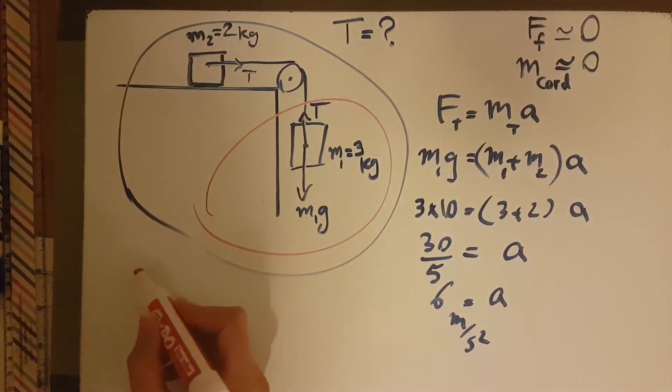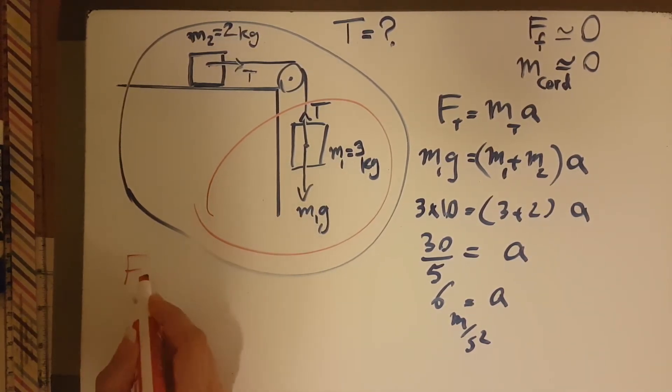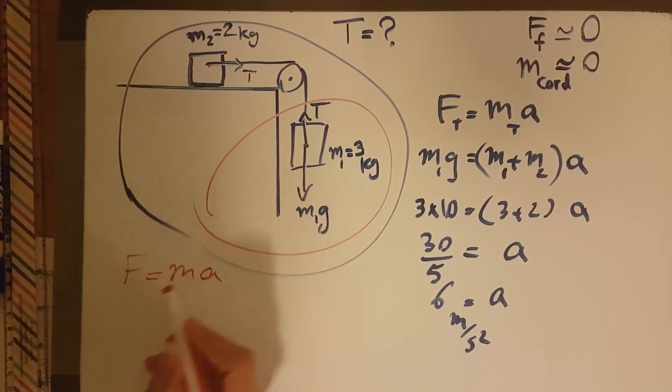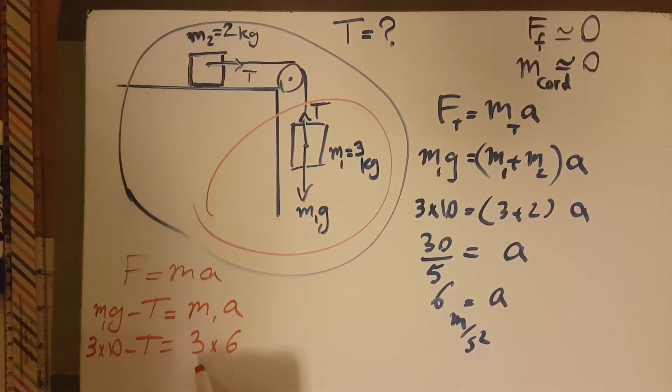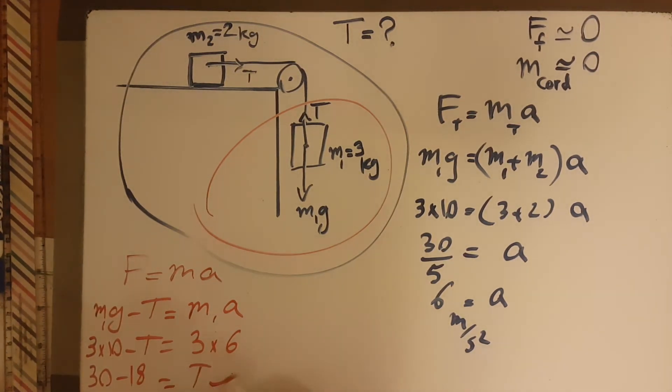And I can see that F equals MA in this circle. It would be M1G minus T equals M1A. M1 is 3 times A, which I already found, so 3 times 10 minus T. T goes to the other side: 30 minus 18, so the T would end up being equal to 12 newtons.